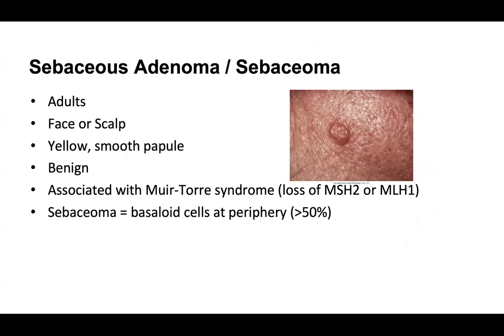Sebaceous adenoma and sebacioma are found in adults. They exist on a spectrum. Sebaceous adenoma or sebacioma can occur in Muir-Torre syndrome, where you have a loss of DNA repair and mismatch proteins — MSH2, MLH1, and also MSH6 and PMS2, which you should know. Sebacioma has basaloid cells at the periphery representing more than 50% of cells. The cutoff usually taught is 50%: more than 50% immature cells is sebacioma; more than 50% well-differentiated cells is sebaceous adenoma.